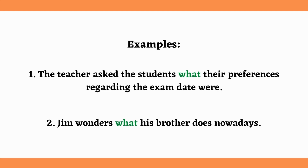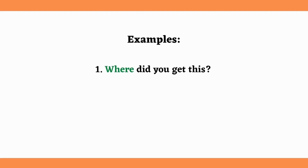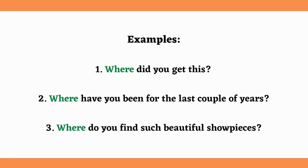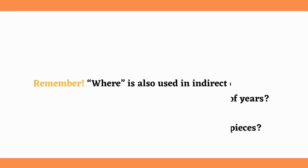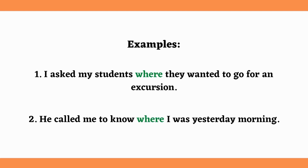Our second WH word is 'Where.' 'Where' is used to ask for information about places. For example: Where did you get this? Where have you been for the last couple of years? Where do you find such beautiful showpieces? Remember, 'where' is also used in indirect questions. For example: I asked my students where they wanted to go for an excursion. He called me to know where I was yesterday morning. None of these sentences are interrogatives, but they ask a question indirectly by the use of the word 'where.'